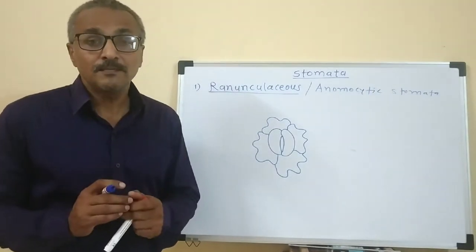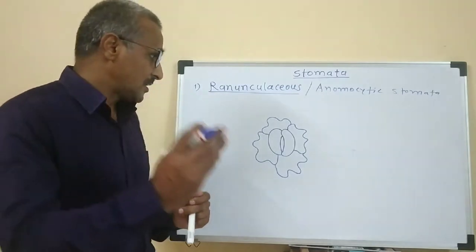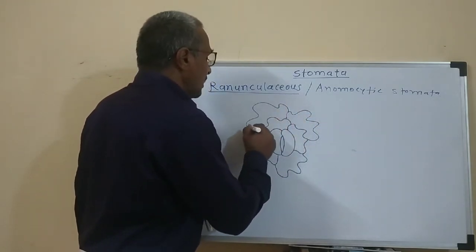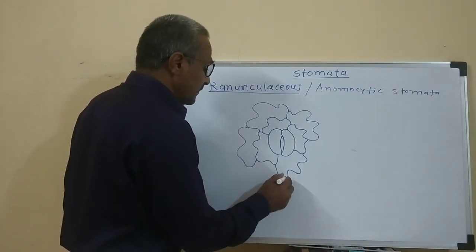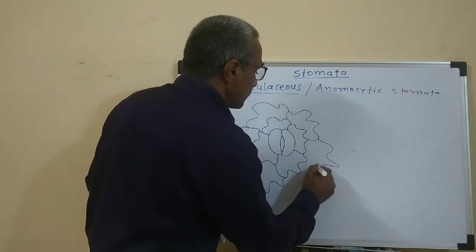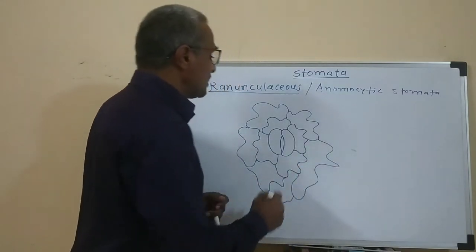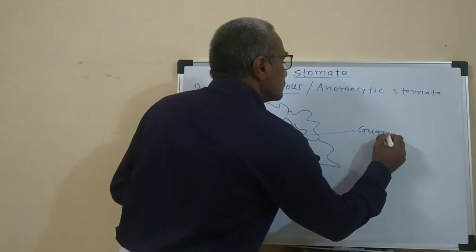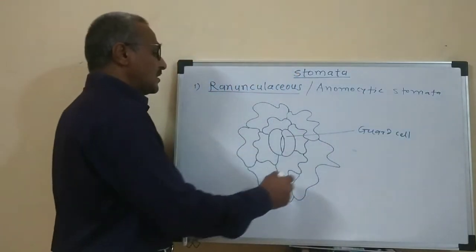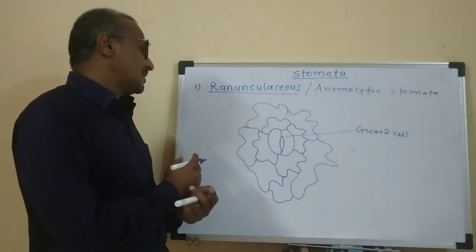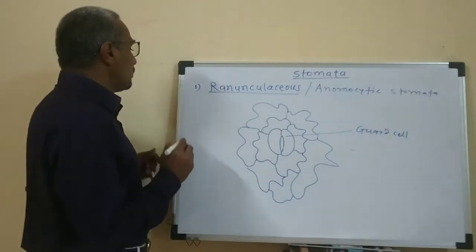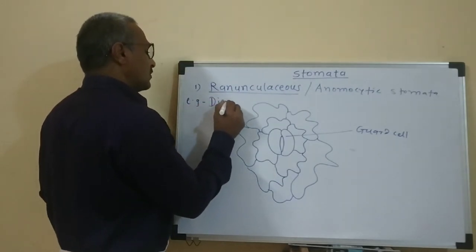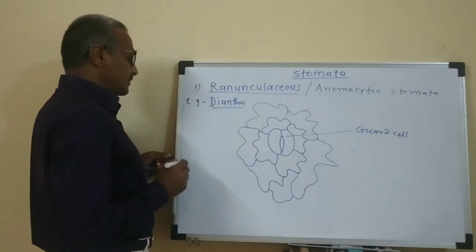Because there is no clear-cut differentiation between the epidermal cells and subsidiary cells — suppose these are the subsidiary cells and around those subsidiary cells there are also epidermal cells — when we observe this, there is no differentiation between the epidermal cells and the subsidiary cells. So we cannot differentiate them. This type of stomata is found in plants of Dianthus or Clematis.